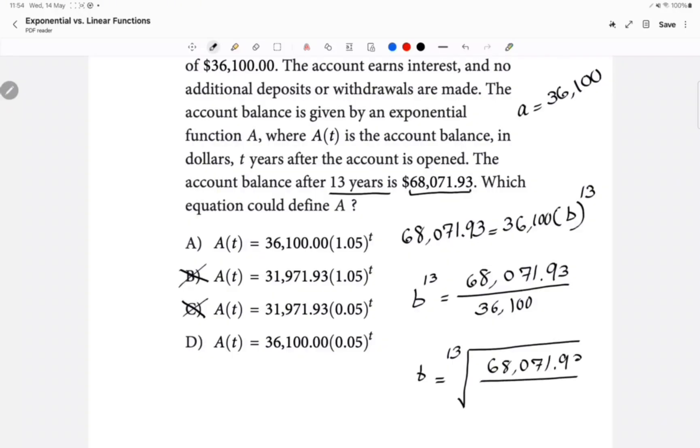68,071.93 divided by 36,100. Now, the problem is that in the calculator there is no root of 13. So what you will do is you will do the whole thing to the power of 1 over 13: 68071.93 over 36,100. And I got 1.049, which basically means the answer is going to be choice A.